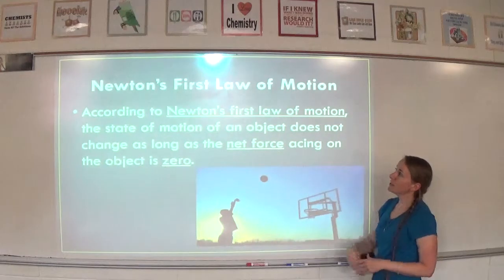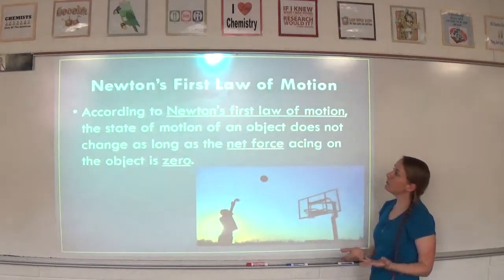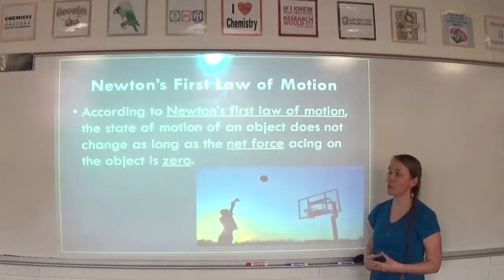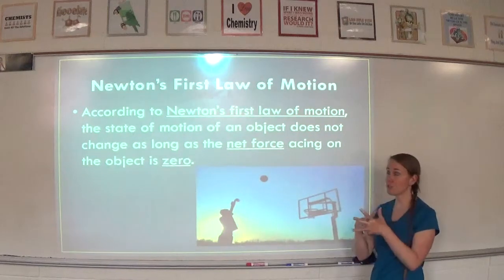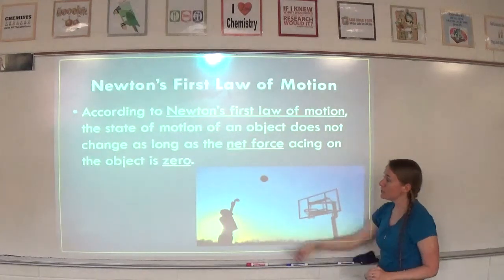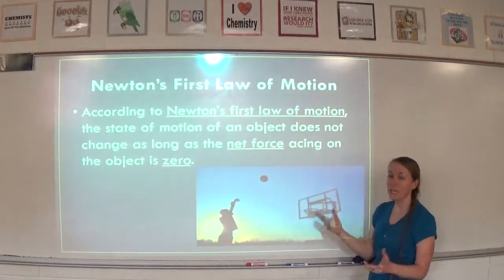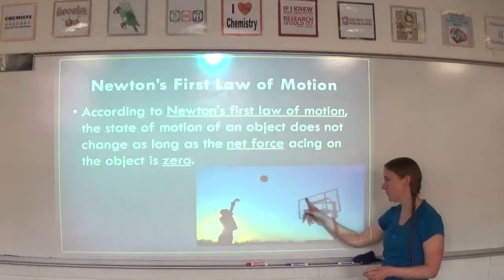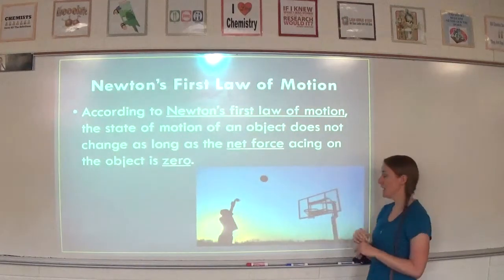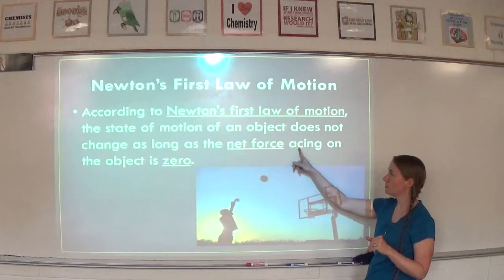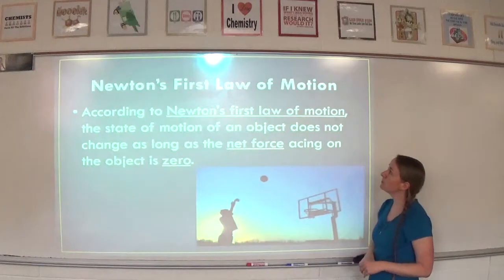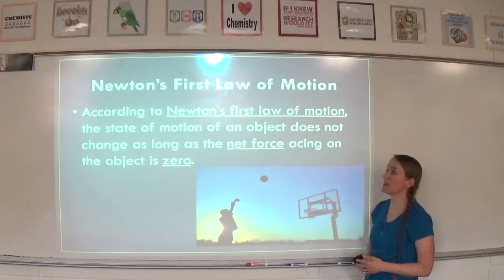Newton's first law of motion states that the state of motion of an object does not change as long as the net force acting on the object is zero. In the section 1 lesson video, we talked about when you have balanced forces — which means the net force is zero — and the object's motion does not change. For example, this boy is shooting his basketball. We know air resistance and gravity are going to pull that basketball back down through the hoop. However, if we lived in a world with no gravity and no air resistance, that ball would just keep on going.